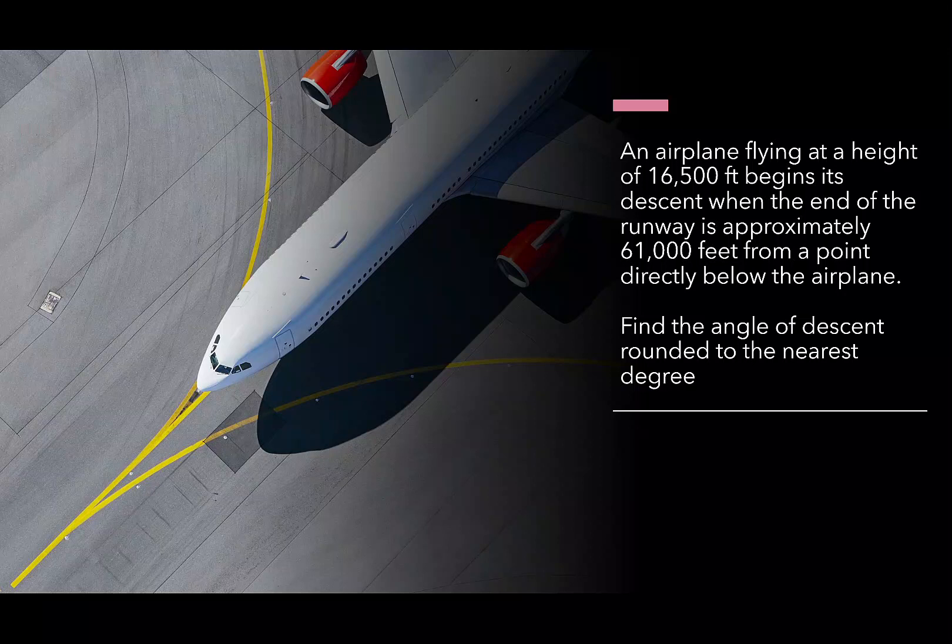We're given an airplane flying at a height of 16,500 feet begins its descent when the end of the runway is approximately 61,000 feet from a point directly below the airplane. We're going to find the angle of descent and then round to the nearest degree.